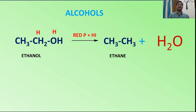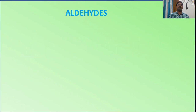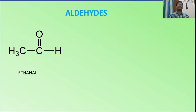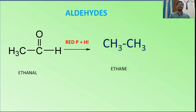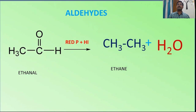For aldehydes, when treated with red phosphorus and hydrogen iodide, our reagent converts them into alkanes. For example, ethanal (acetaldehyde) converts into ethane, and the oxygen converts into water. Let us see how many hydrogens are required.